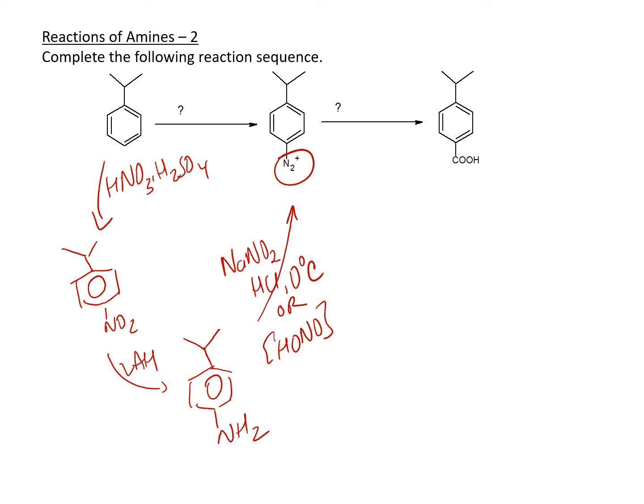Now for the second part. In the second part, you have to go from the diazonium salt to the carboxylic acid. There is no direct route for this. We're going to have to do this in two steps.